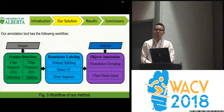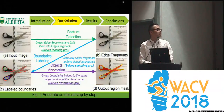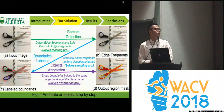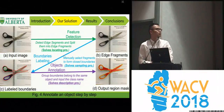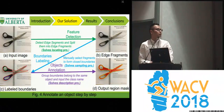To solve these problems, we propose a solution containing three steps: feature detection, boundary labeling, and object annotating. Given an input image, we first detect edge segments and then split them into edge fragments. In the second step, we manually select the fragments sequentially to form closed boundaries — solving the locating and sampling problems respectively. In the third step, we group the boundaries belonging to the same object and input the class name, solving the description problem.